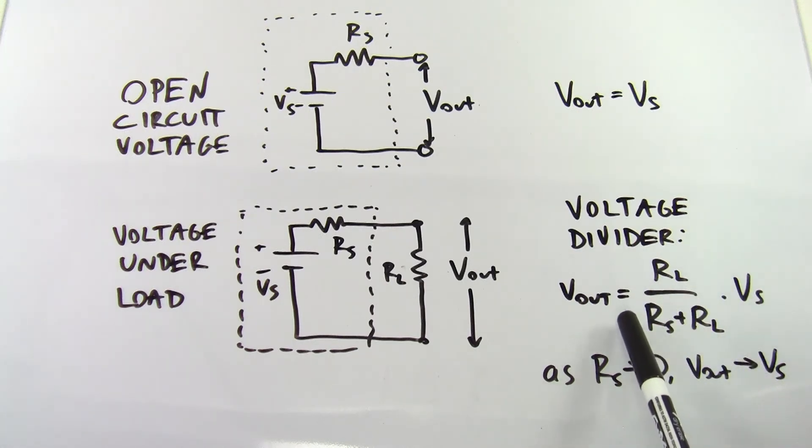You can see from this fraction that as RS goes to zero, this fraction just becomes RL over RL, which is equal to 1. So as RS approaches zero, Vout will approach VS.